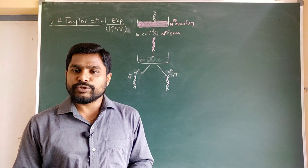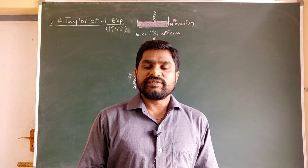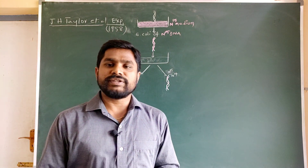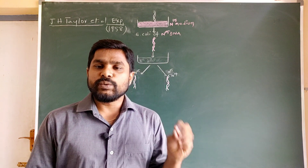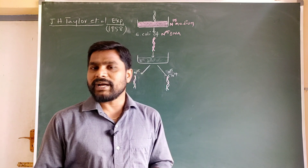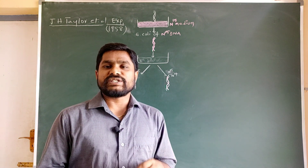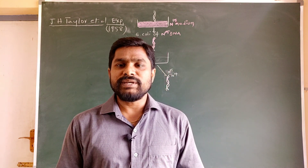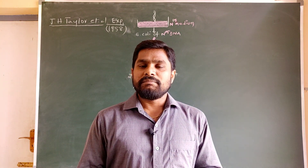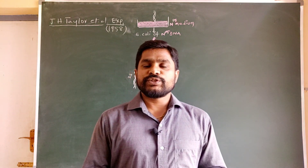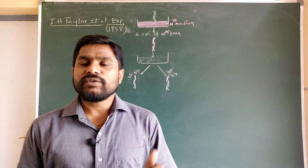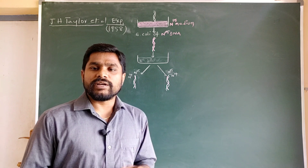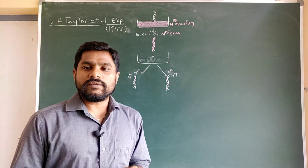Hi and hello everyone, this is Ravindra Babu. Welcome back to my channel Silver 90s Bio Net. In the last video we discussed Meselson and Stahl's experiment, which is a quantitative experimental proof for a semi-conservative model of DNA replication, proved in a prokaryotic organism, E. coli bacteria. Likewise, there were some other scientists who worked in the same context and provided the same experimental proof for the semi-conservative model of DNA replication but in different organisms.